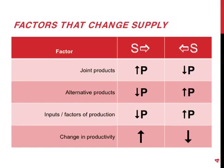The inputs or the factors of production can lead to an increase in supply. So if inputs are more affordable or the cost of the factors of production is lower, the whole supply curve moves towards the right. Finally, if there is an increase in productivity that also causes the supply curve to move towards the right.